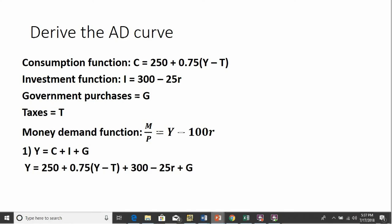So the first step is to substitute in for these three variables. For C, we'll plug in the consumption function. For I, we will plug in the investment function. And G is G, government purchases.